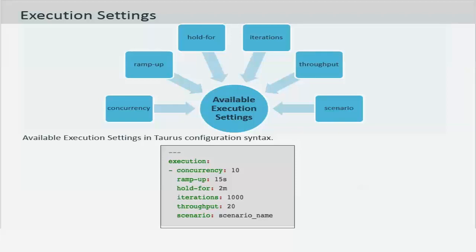The ramp up time which is the time the system will take or the script will take to reach the target concurrency, and hold for is the time to hold the target concurrency once it has reached the maximum concurrency defined.